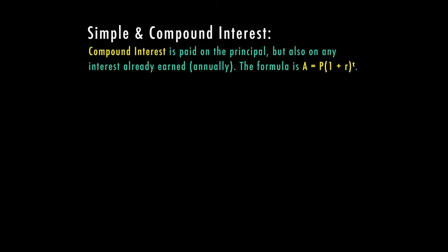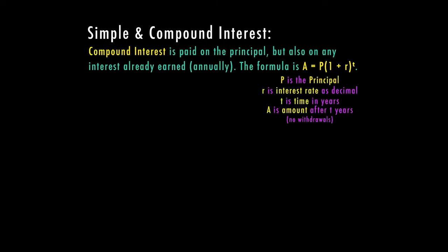Now let's look at compound interest. This is paid on the principal, but also on any interest already earned annually. The formula is A equals P times one plus R in parentheses, to the T power. This is similar to simple interest, except now we're solving for A — the amount you actually have after T years — whereas with simple interest, the formula solves for just the interest.